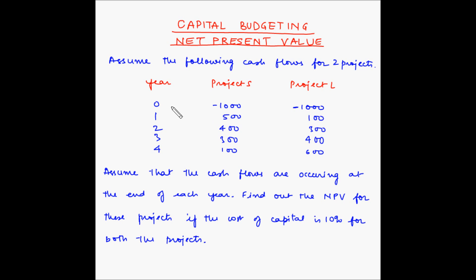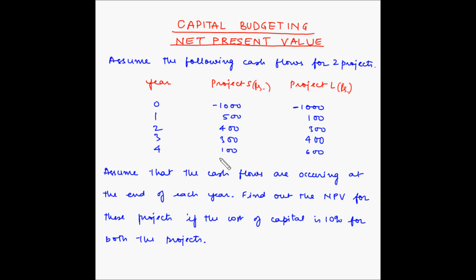Assume the following cash flows for two projects. We have been given the years and there are two projects, Project S and Project L. The initial outlay for both projects is 1000 rupees and the cash inflows for both have been provided. Assume that the cash flows are occurring at the end of each year. Find out the NPV for these projects if the cost of capital is 10% for both. I have been using the same example for other methods like payback and discounted payback, so you will be able to easily compare and contrast these methods.